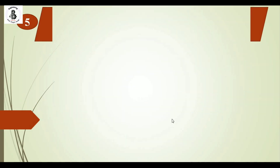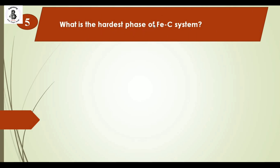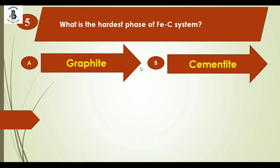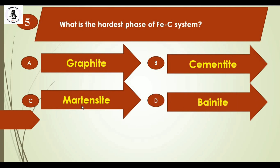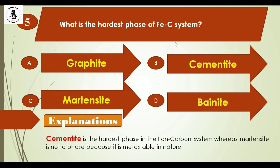Question 5: What is the hardest phase of the Fe-C system? Option A: graphite, Option B: cementite, Option C: martensite, Option D: bainite. In the iron-carbon system, cementite has the highest hardness. Martensite is not a phase because it is metastable in nature. As per the iron-carbon diagram, the hardest phase is cementite. The right answer is option B.